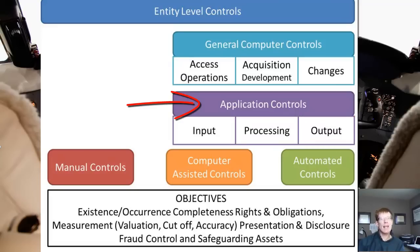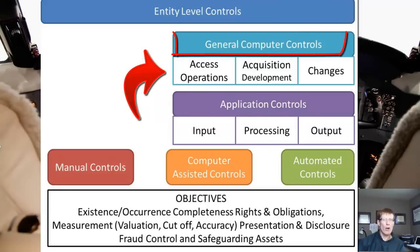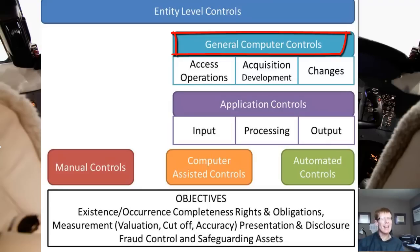Before we can safely say that these application controls are effective, we need to ensure that there is overall system integrity. General computer controls are akin to entity-level controls, only in a system sense, in that they are pervasive across multiple transaction cycles and across different software applications. For example, if someone has the ability to hack into the system and change the programming code, it really doesn't matter how fancy the input, processing, or output application controls are, because the overall integrity of the system is jeopardized.